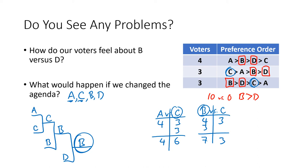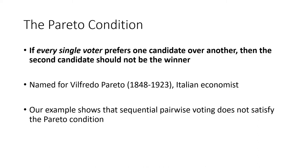So we see that the result of the election heavily depends on the ordering of the candidates — the agenda. This also shows that sequential pairwise voting fails a fundamental fairness condition called the Pareto condition. It states that if every single voter prefers one candidate over another, the non-preferred candidate should not be the winner. In our sequential pairwise method, we saw that was possible — D won even though every voter preferred B over D. This condition is named after Vilfredo Pareto, an Italian economist, and this example shows our new method does not satisfy it.